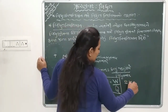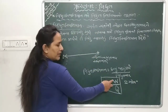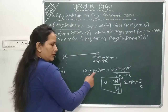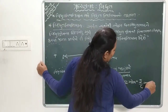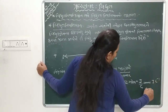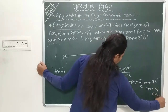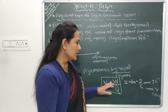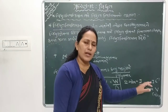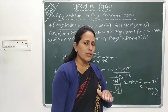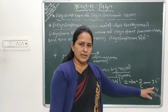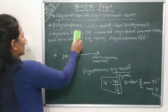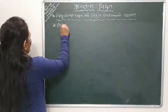Vidyut Sthitiman no SI ekam Joule prati Coulomb chhe. Joule prati Coulomb na lakhvu hoy to Volt - V pan lakhi shakay. Volt to Italyano vaigyanik Alessandro Volta na maan ma aa ekam ne Volt pan kahiye chhe. To Vidyut Sthitiman no SI ekam Joule prati Coulomb athva Volt - banne ma thi game te lakhiye.